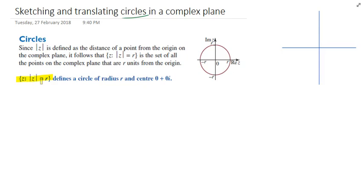|z| = R defines a circle of radius R and centre 0 + 0i. So if I do a quick example, |z| equals... we need a number don't we, 5.